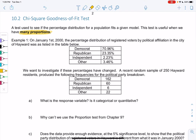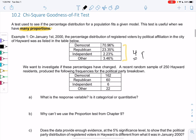For my first example, on January 1st, 2000, we have the percentage distribution of registered voters by political affiliation in the city of Hayward. Notice I have four proportions now: Democrat, Republican, Independent, and Other. That's a hint to use goodness of fit when you have proportions and you have many of them. We want to investigate if these percentages have changed.